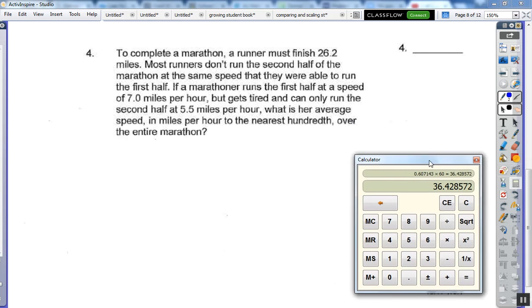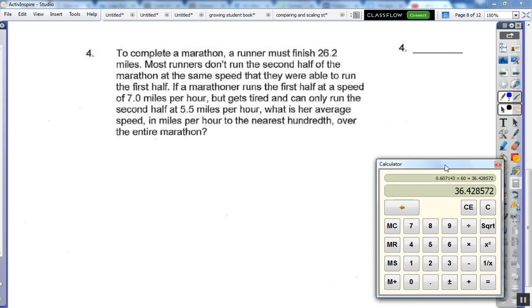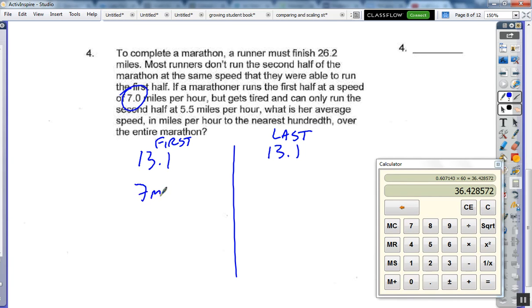To complete a marathon, a runner must run... Oh, I remember this problem. So we have two halves. We have 13.1 for the first half and 13.1 for the last half. And the first half of the marathon, we went 7 miles per hour. We remember that rate times time equals distance. And the second half, they were going 5.5 miles per hour.